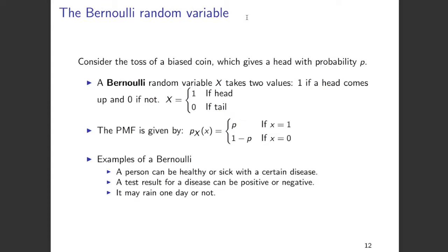The probability mass function, or the PMF, of this random variable is given in this form. It takes value 1 with probability p, and value 0 with probability 1 minus p. So it's a very simple random variable.